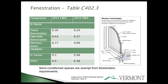Fenestration has been updated. The U-factor for fixed fenestration is now more stringent — from 0.36 to 0.29. Operable fenestration went from 0.43 to 0.37. Skylights have slightly decreased. Solar heat gain coefficients are unchanged from the 2015 CBS. This training is focused on changes from 2015 — it's meant for someone already familiar with the 2015 CBS. Semi-conditioned spaces are exempt from fenestration requirements entirely.